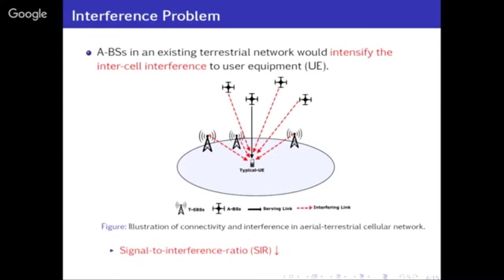In the ABS scenario, the link between the BS and the user is line-of-sight, and interference is also line-of-sight. Hence the SINR goes very low, all because of LOS-kind interference.